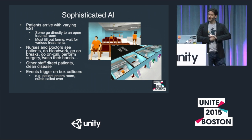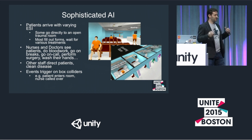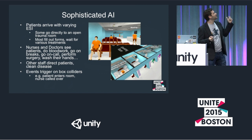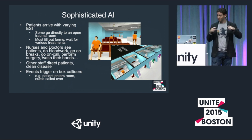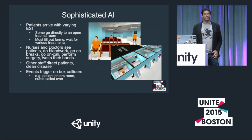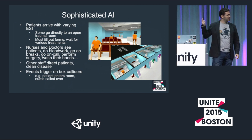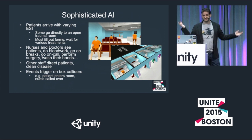Doctors and nurses wash their hands, which is super important for the disease simulation. There are also janitors and admin staff. The event model is pretty simple — it's all geographic with simple box colliders. When a patient enters a treatment room, the nurse queue is notified, and the first available nurse comes over.